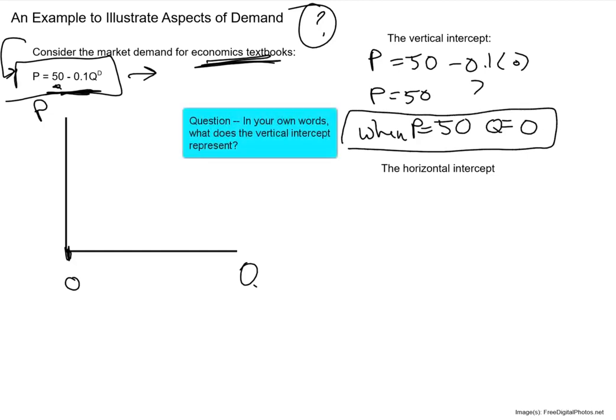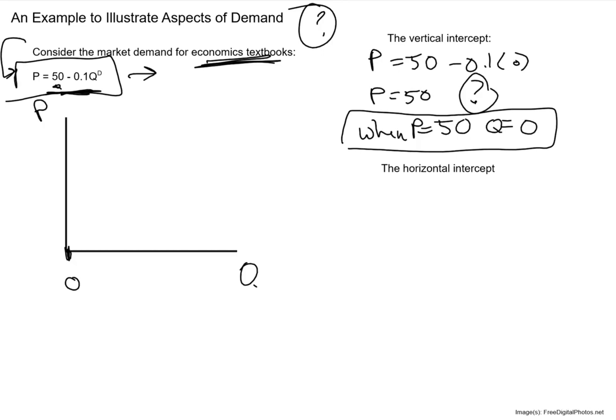Stop and think about what that vertical intercept point represents in everyday language. Prices are the amount of money buyers would pay in a transaction; QD is the amount of units consumers would want to purchase. The vertical intercept of 50 means that if the price were $50, consumers wouldn't want to buy any at all. That's also true for $70, $80, $90, $100 — but $50 is special because it's where quantity demanded first hits zero.